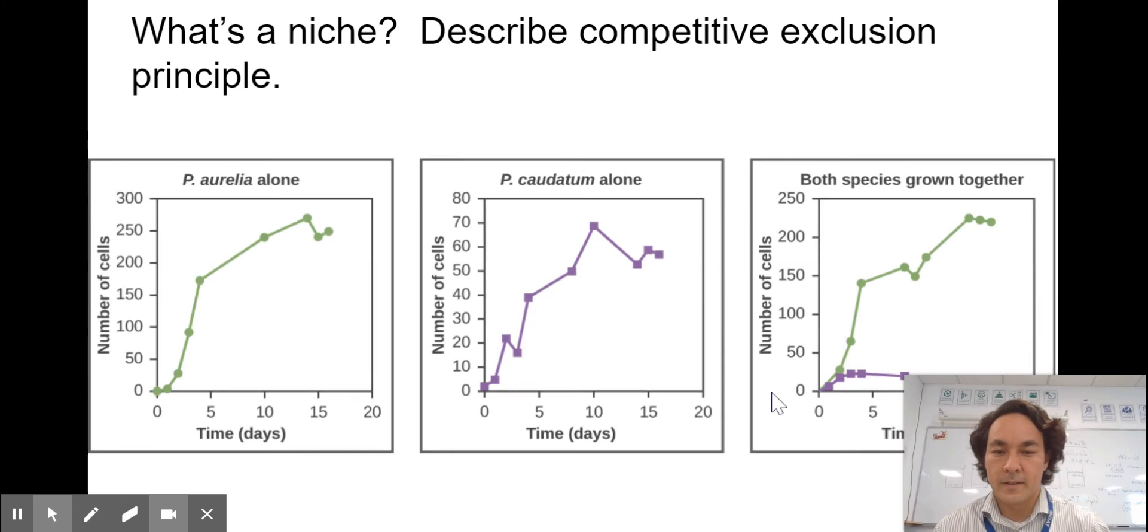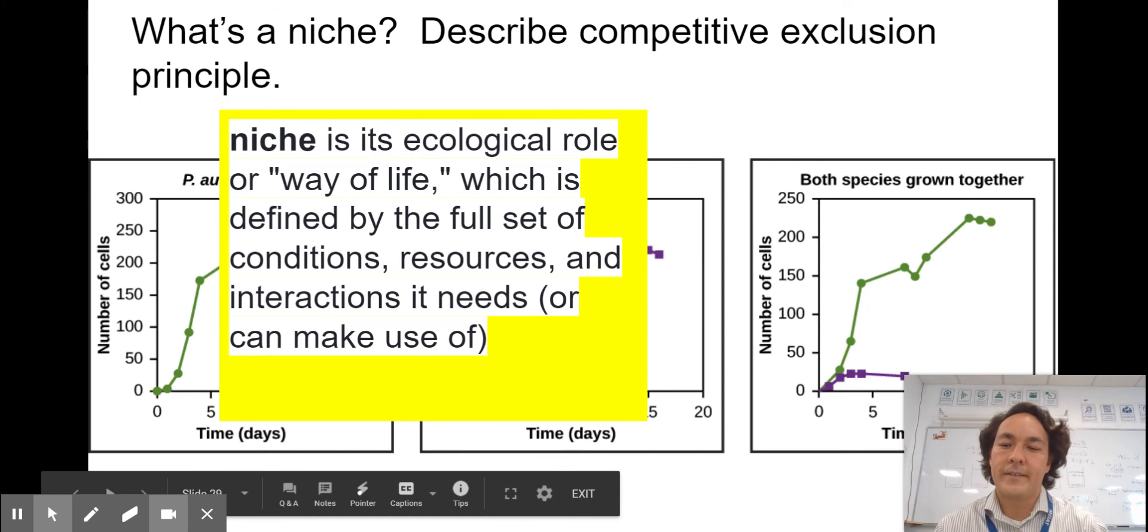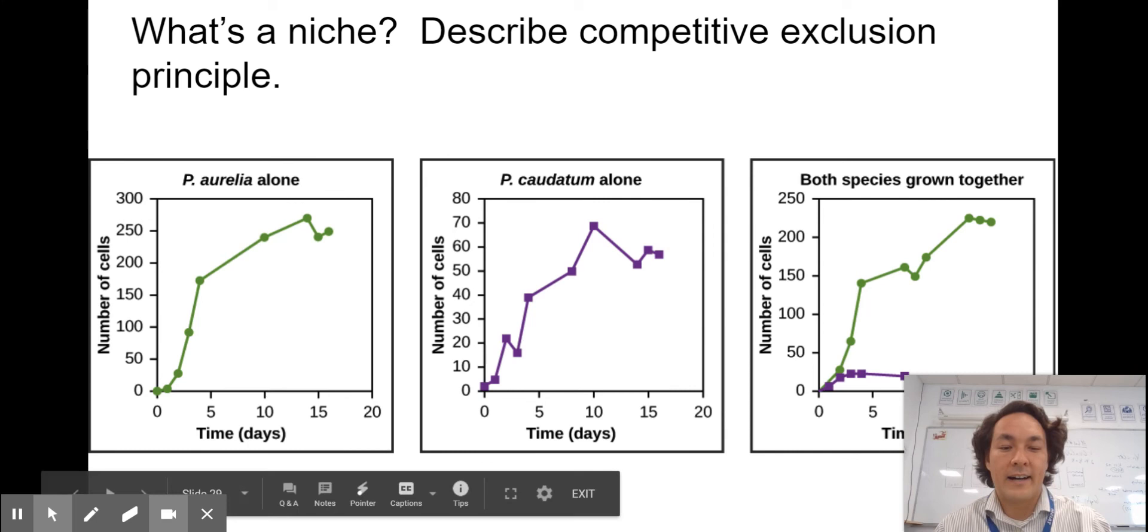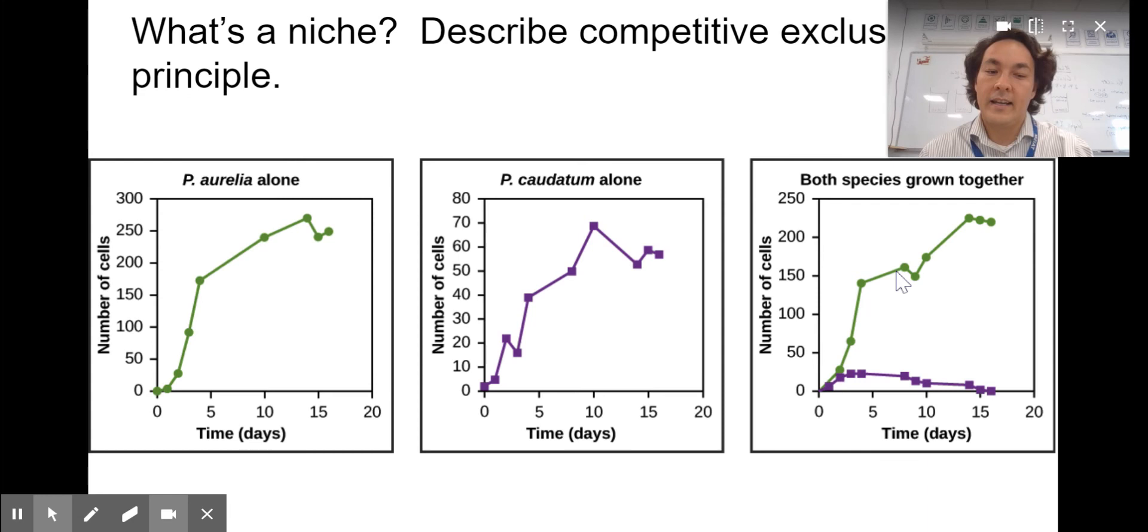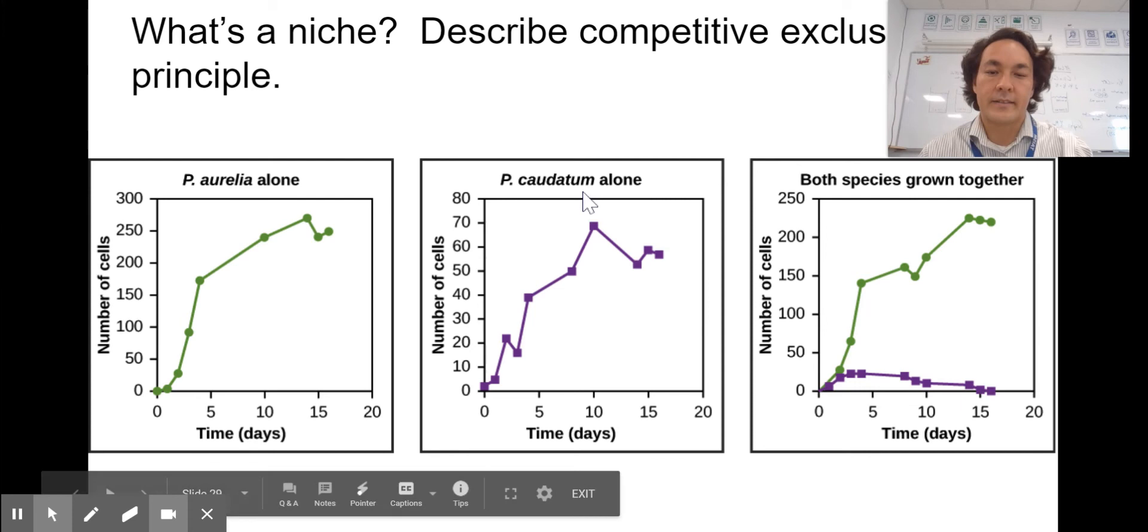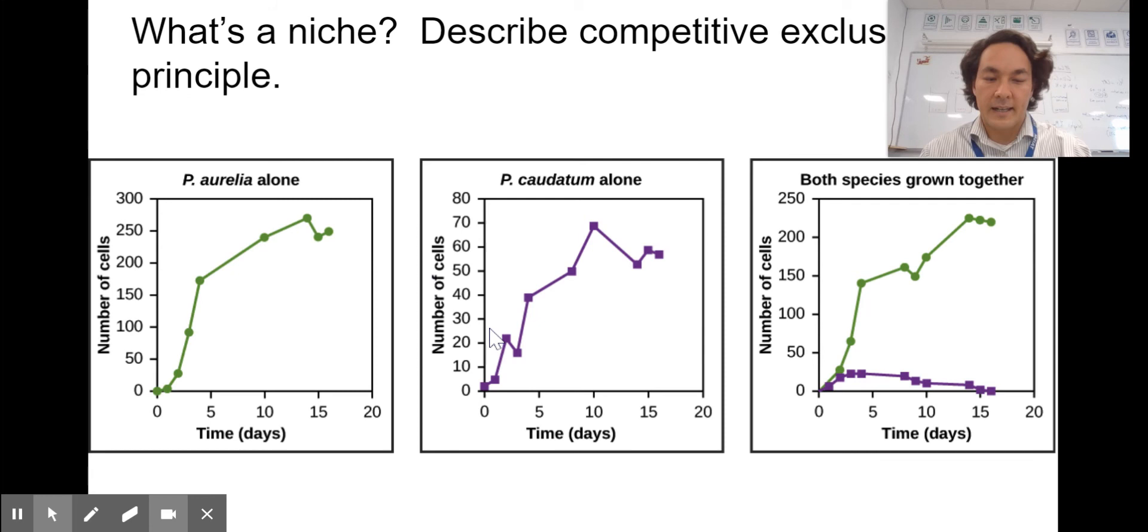What's a niche? A niche is your job or role, your way of life in a habitat. It's an ecological role or way of life, which is defined by a full set of conditions, resources, and interactions it needs. If you have two species try and occupy the exact same niche, what's going to happen? They're going to fight and one of them is going to go extinct. This is a famous experiment showing the competitive exclusion principle by Dr. Gauss.